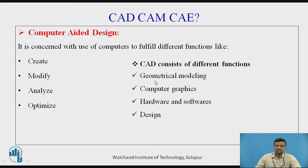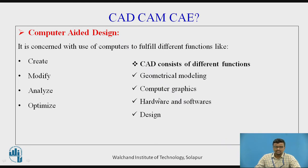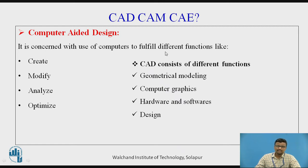CAD consists of different sectors: geometrical modeling, which includes geometrical transformations and types of geometrical modeling; computer graphics, also called interactive computer graphics, consisting of hardware and software. Mainly it consists of design, where manual design is replaced by computer-aided design.